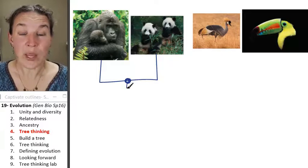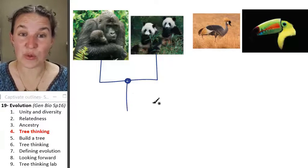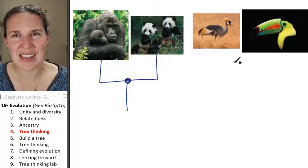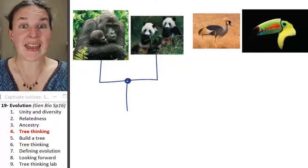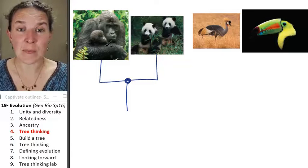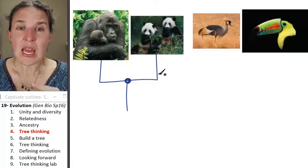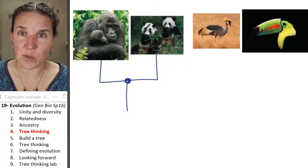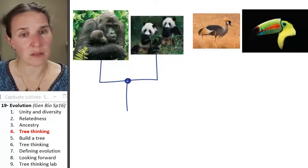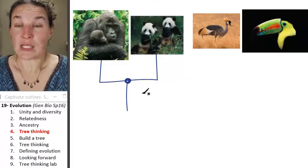And we can even think through, like, what are some traits that that common ancestor might have? Traits that both of these guys share. Do you think the common ancestor had a white face with black eyes? It's possible.